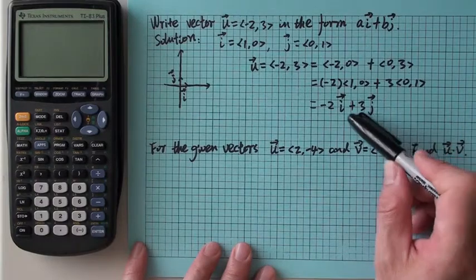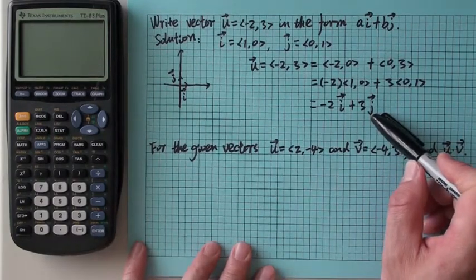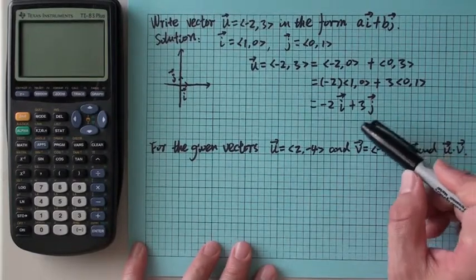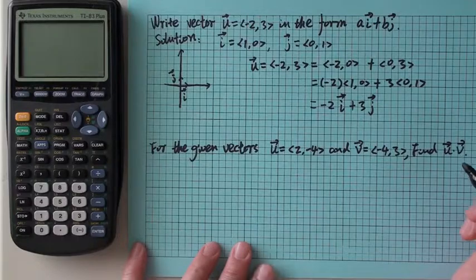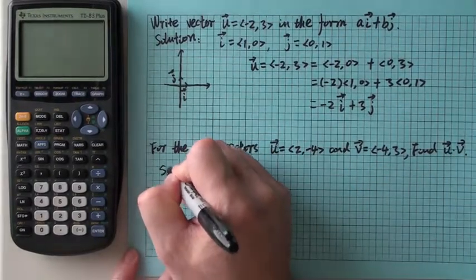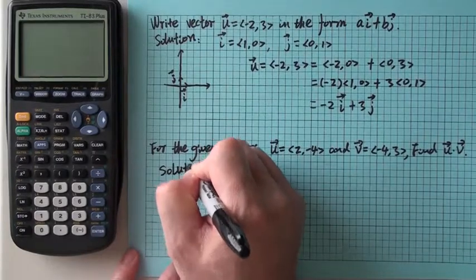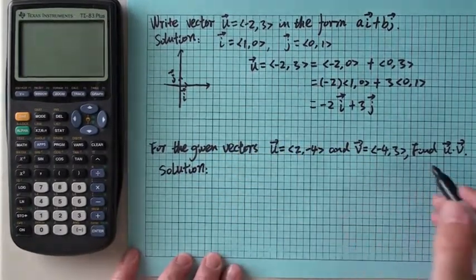In the book, they use a bold letter, dark and thick. So that's the difference between the printing and handwriting. The second one is to find a dot product.